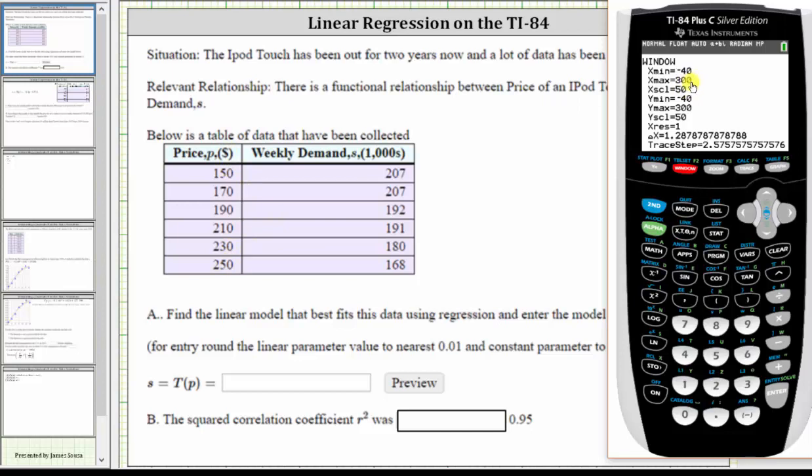I also scaled the y-axis, which is really the s-axis, from negative 40 to 300 by 50s, because the maximum demand is 207. So all these values will now show on the coordinate plane.